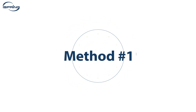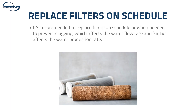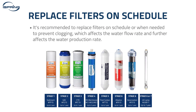Method number one: replace filters on schedule. Water quality varies from house to house and water filters can clog after using them for a long period. It's recommended to replace filters on schedule or when needed to prevent clogging, which affects the water flow rate and further affects the water production rate.